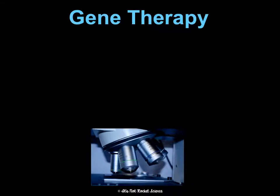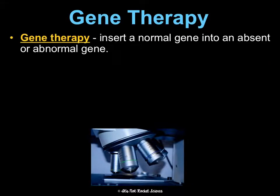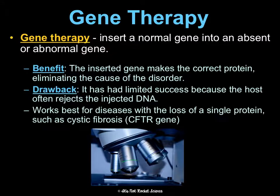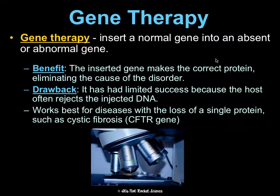Another type of genetic engineering is gene therapy: inserting a normal gene where a gene is absent or abnormal. The inserted gene could then make the correct protein and eliminate the cause of the disorder. The bad news is it has limited success because hosts often reject the injected DNA, and it works best when only one protein is messed up or missing, like in Cystic Fibrosis.